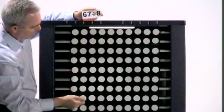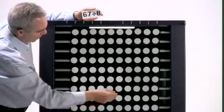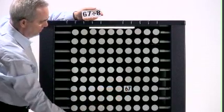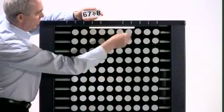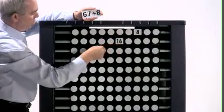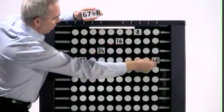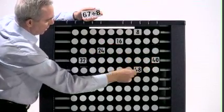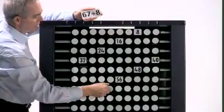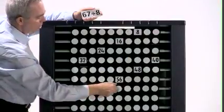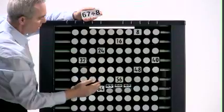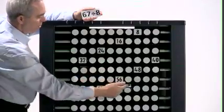67 divide by 8. 67 lives here. Divide by 8. 1, 2, 3, 4, 5, 6, 7, 8. Remainder 1, 2, 3. 8, remainder 3.